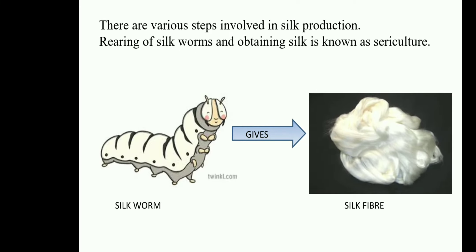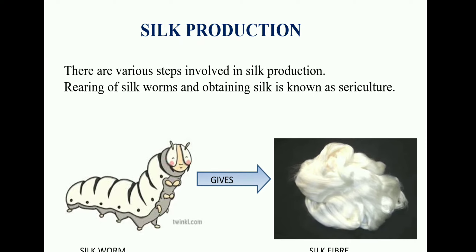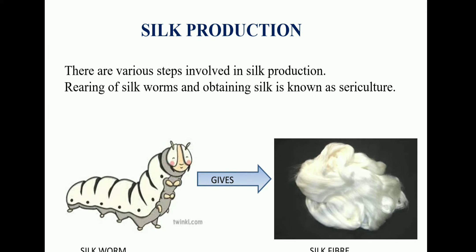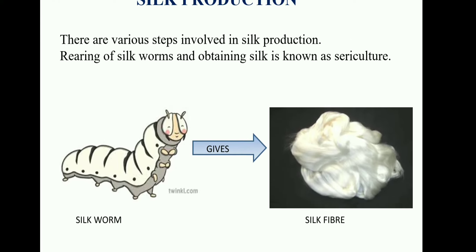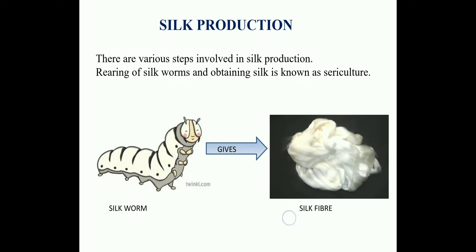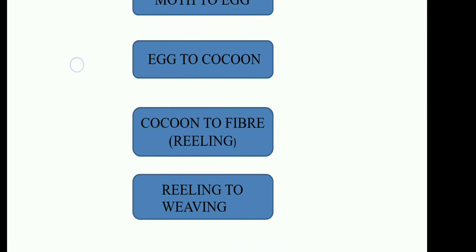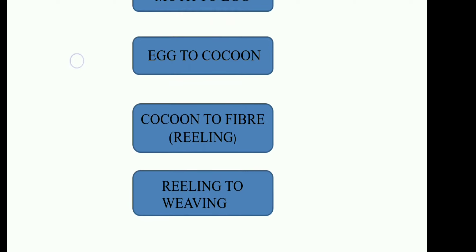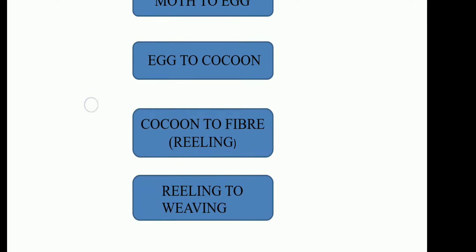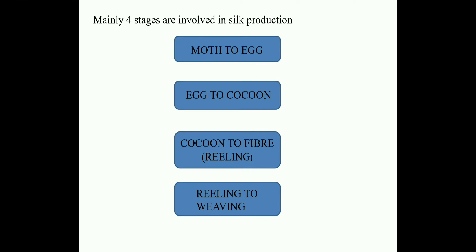Production of silk involves various steps. Rearing of silkworms and obtaining silk is known as sericulture. There are different stages in silk production: first, moth to egg; then egg to cocoon; then cocoon to fiber, which is reeling; and finally reeling to weaving. We will study each step in detail.